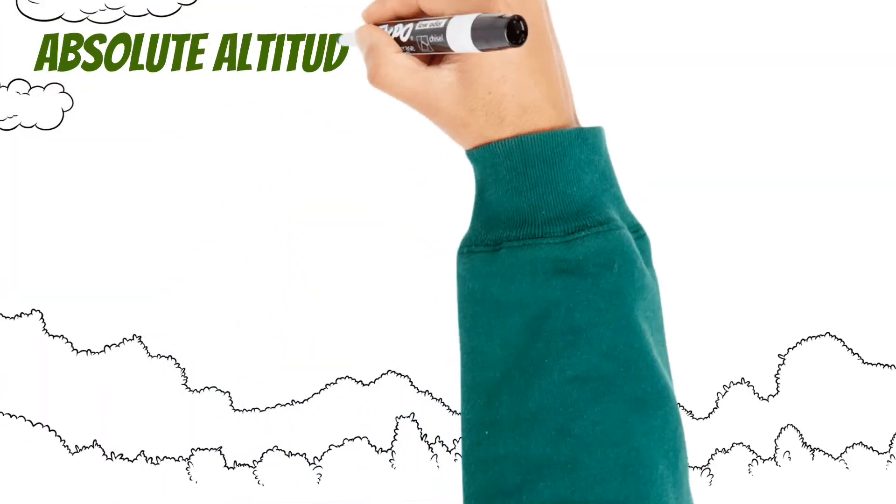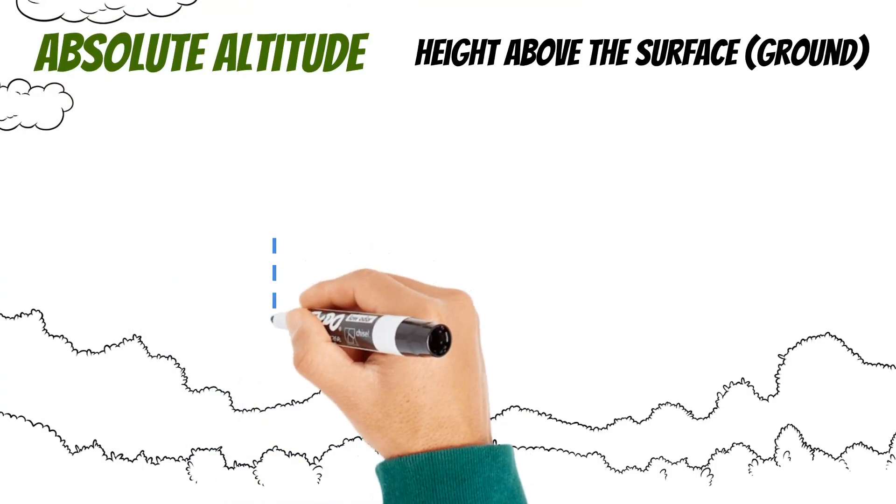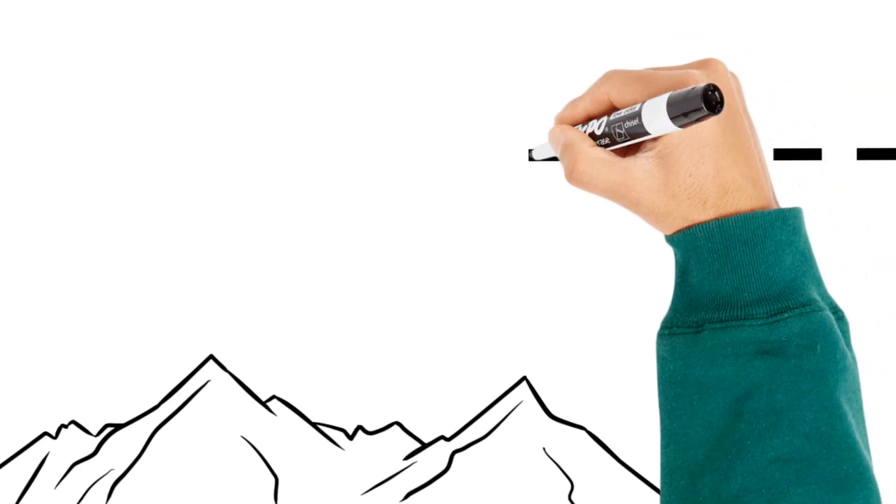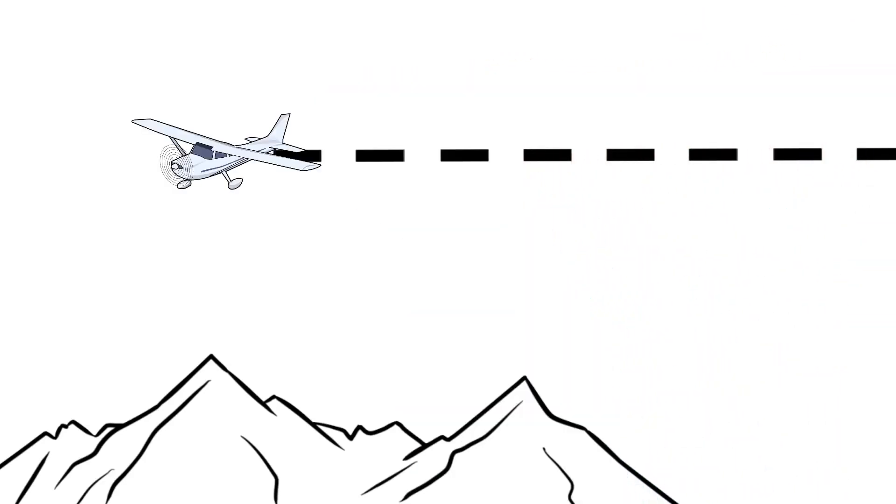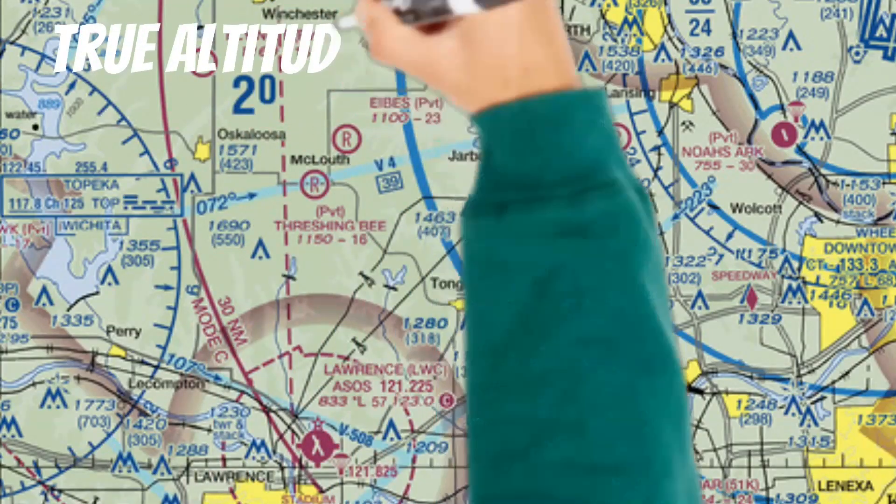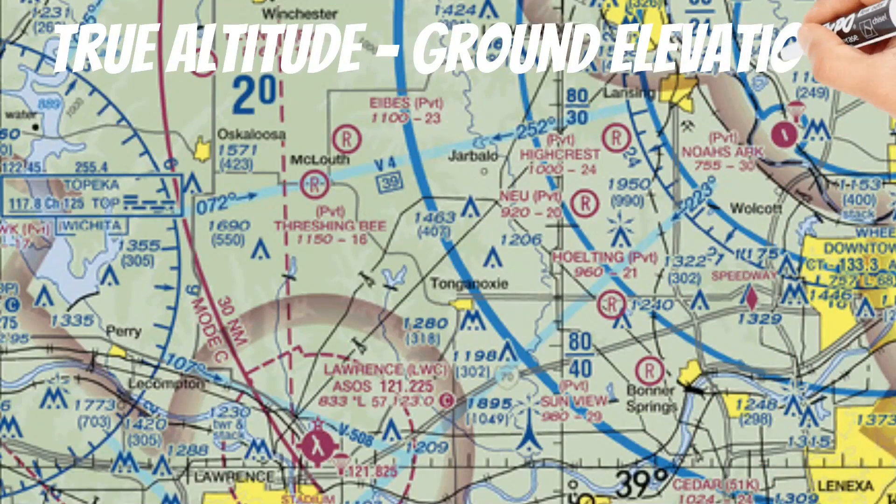Next we have absolute altitude. And this is simply our airplane's height above the surface, and we express this in AGL. And even though your true altitude might stay the same, your absolute altitude will go up and down with the terrain. And unless you have a radar altimeter, you'll have to calculate this if you want to know your absolute altitude. It's not that hard to do though. All you have to do is subtract the ground elevation from your true altitude.